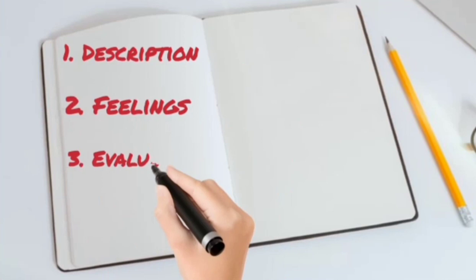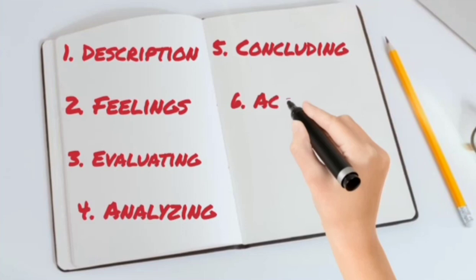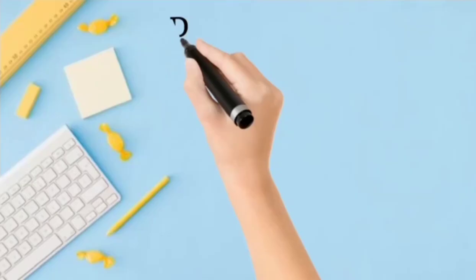What are the activities? There are six activities. The first one is description. The second one is feelings. The third one is evaluation. The fourth one is analyzing. The fifth one is concluding. The sixth one is action planning. Let's look at the description.